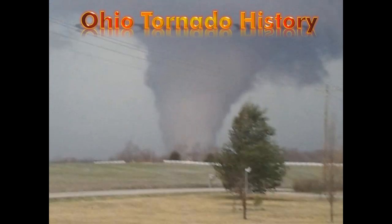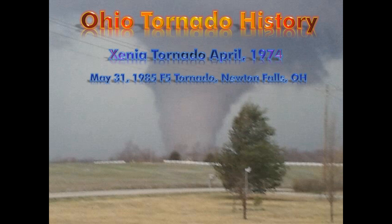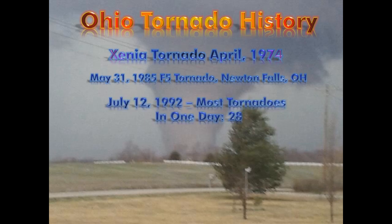Let's talk about Ohio tornado history. Ohio is not a state known for having a lot of tornadoes — on average, we see about 16 tornadoes per year, with peak tornado season from April through July, though tornadoes have occurred in every month of the year in Ohio. Some of the more historic events include the Xenia tornado in April of 1974 as part of the super outbreak, and May 31st, 1985, the F5 tornado that devastated Newton Falls along with many other smaller tornadoes that formed near the Ohio-Pennsylvania border. On July 12, 1992, we had the most tornadoes in one day: 28 tornadoes recorded in Ohio, causing significant damage across northern Ohio.